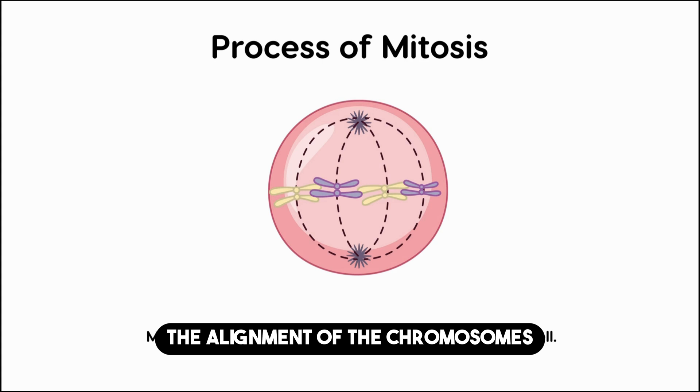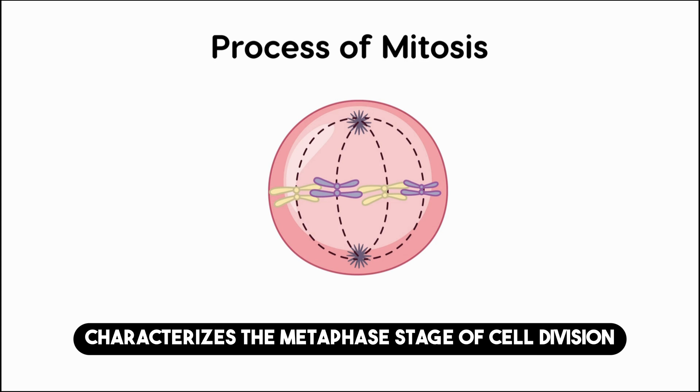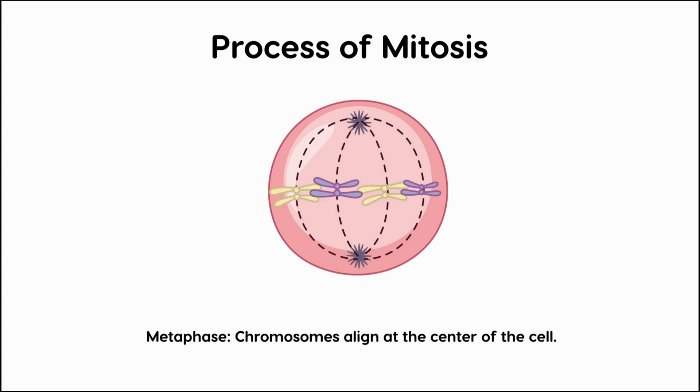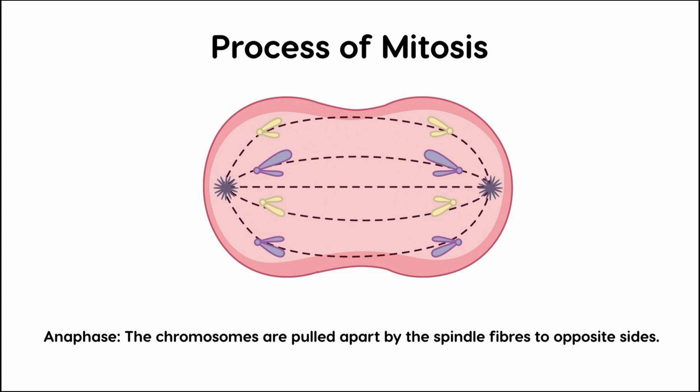The alignment of the chromosomes along the cell's midline characterizes the metaphase stage of cell division. Prophase comes before metaphase, which is followed by anaphase.